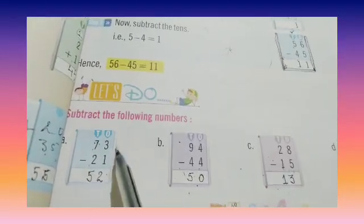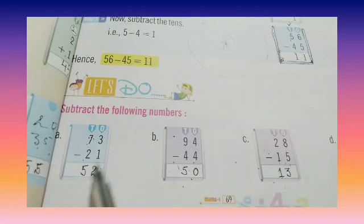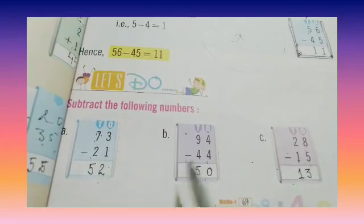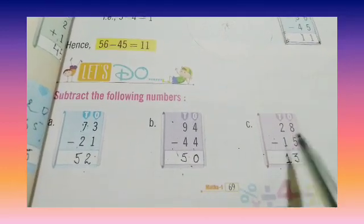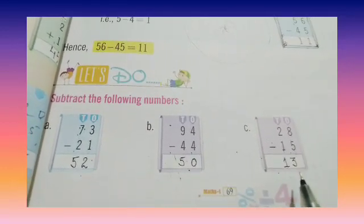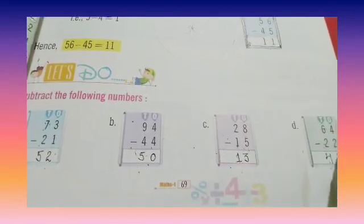To review: 73 minus 21 is 52, 94 minus 44 is 50, 28 minus 15 is 13, and part D, 64 minus 22 is 42.